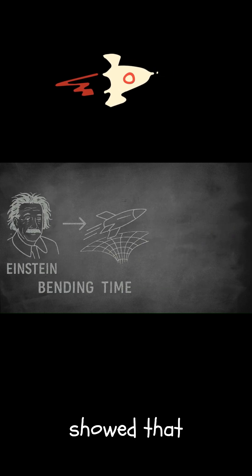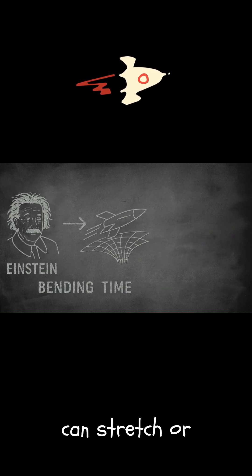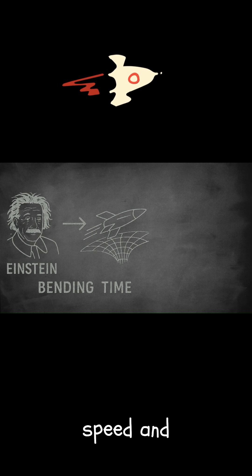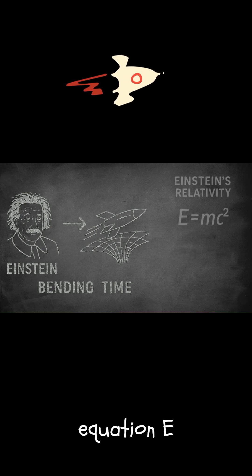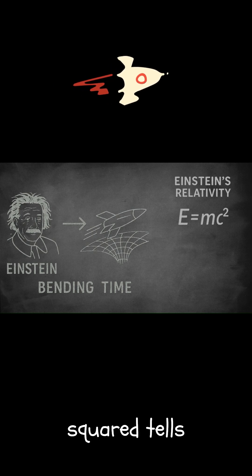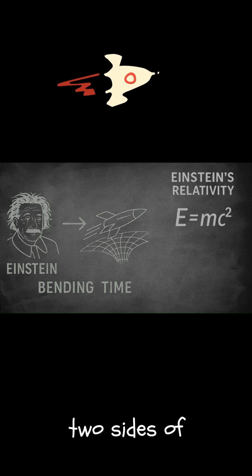Einstein's theory of relativity showed that time is not constant. It can stretch or shrink depending on speed and gravity. The famous equation E equals mc squared tells us that energy and mass are two sides of the same coin.